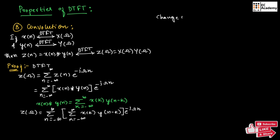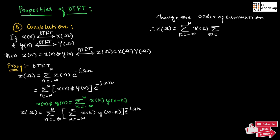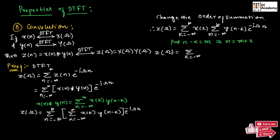Now, let us change the order of summation. Therefore, we can write z of omega equal to summation of k equals minus infinity to infinity of x of k, then summation of n equals minus infinity to infinity of y of n minus k exponential to the power of minus j omega n. In the above equation, let us put n minus k equal to m. So, n can be written as m plus k. Substituting this, we can write z of omega equal to summation of k equals minus infinity to infinity of x of k, summation of m equals minus infinity to infinity of y of m exponential to the power of minus j omega times m plus k.